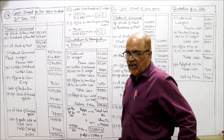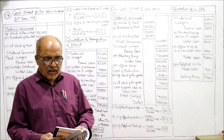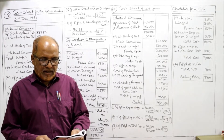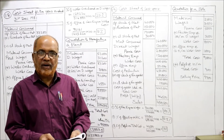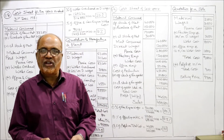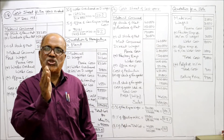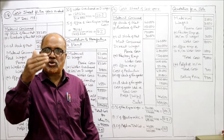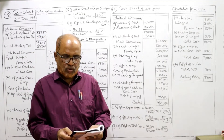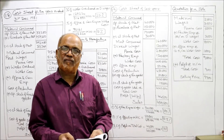This is the end of problem number 18. Now problem number 19: the following figures have been taken from the books of a firm. Raw material opening stock 40,000, raw material closing stock 30,000, finished goods opening stock 10,000, finished goods closing stock 15,000. Purchase of raw material 1,50,000, direct wages 1,20,000, factory expenses 1,20,000, office expense 50,000, sales 4,89,500.